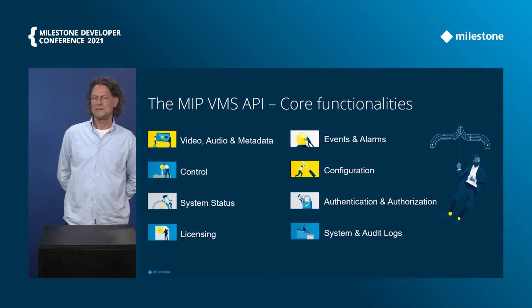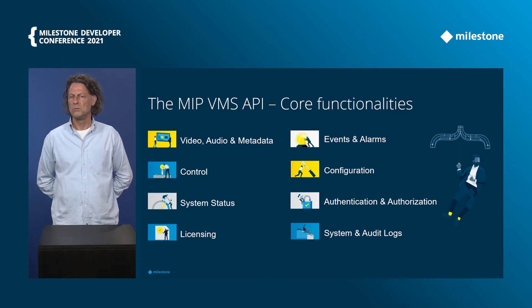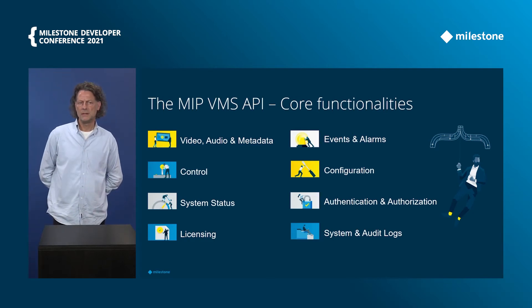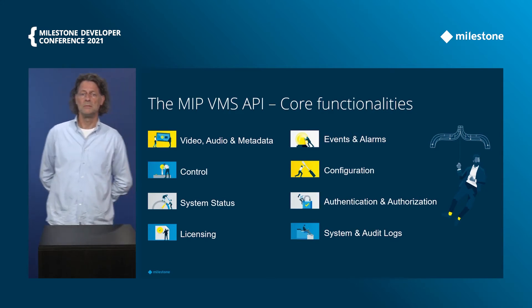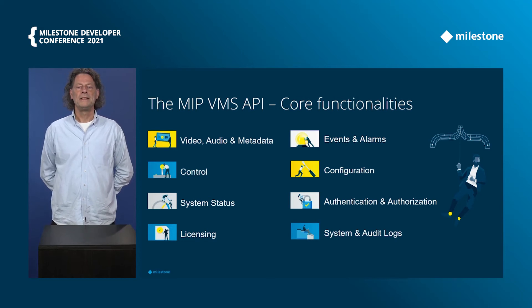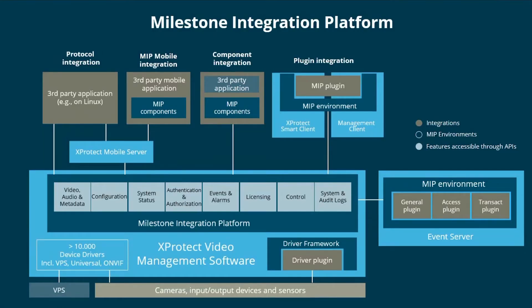And finally we have the system area with system and audit logs. When you want to create logs from within your code, you can use these features to align them with the whole logging system in Milestone XProtect. So all these things brought to one diagram would look like this — you will probably see this diagram in other presentations as well. The big blue box in the middle represents the core VMS, and the gray boxes in the middle represent the different feature areas of the API, from video, audio, and metadata streaming to system and audit logs.